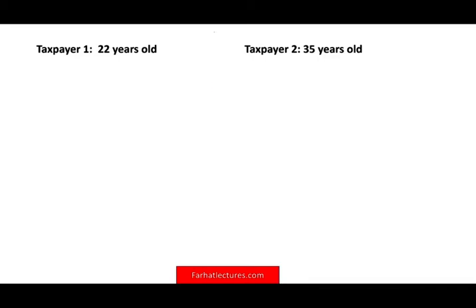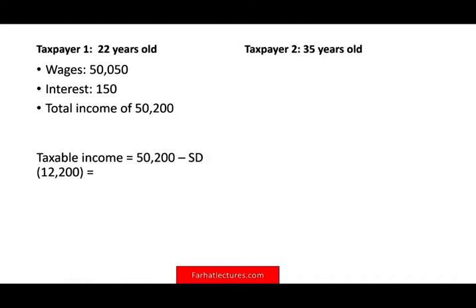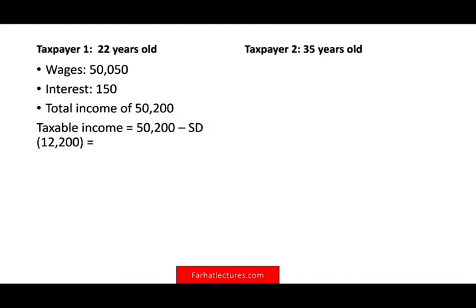Let's assume Taxpayer One is 22 years old. This individual studied accounting, just graduated, and got a job offer for $50,050. They have some savings from their parents, earning interest of $150, so their total income is $50,200. Taxable income is total income minus the standard deduction of $12,200. They're single, so their taxable income is $38,000. This individual works at a CPA firm, and once they pass the exam, their salary should go up to $65,000.